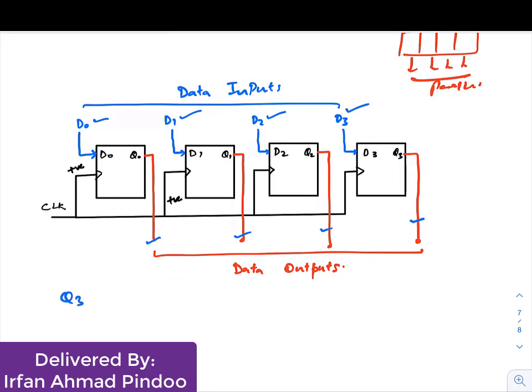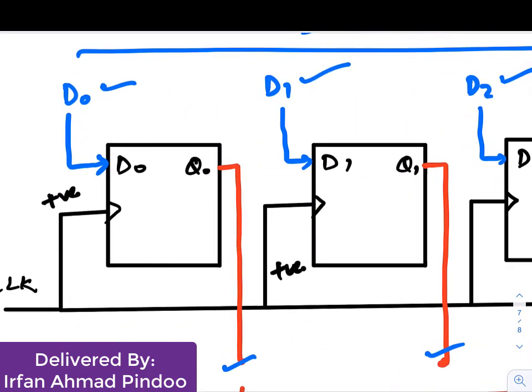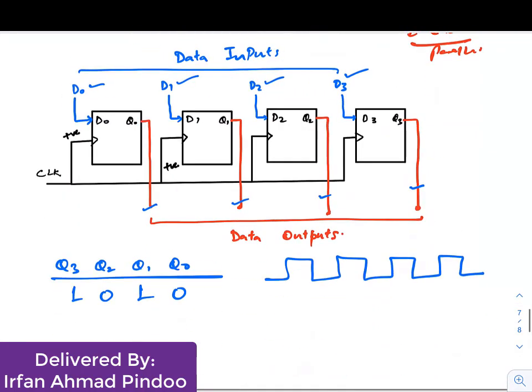If you want to store data in the register in the form of 1010, can you tell me how many clock pulses will be required? Here is your clock. We are following edge triggering, and there is no bubble, so it is positive edge trigger. We will note the 0 to 1 transitions.